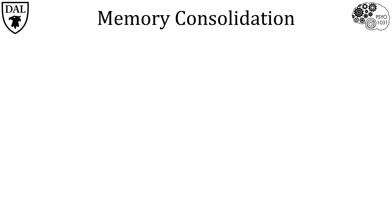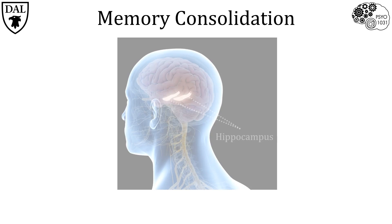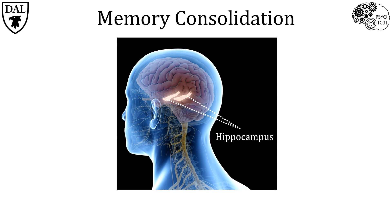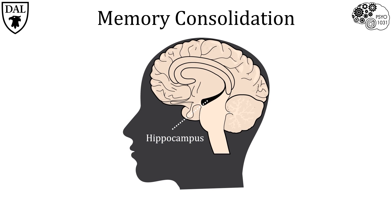If we move from sensory memory to working memory and then finally to long-term memory, we must acknowledge the role of the mighty hippocampus, which sits inside the cerebral cortices. The hippocampus can be visualized in this 3D representation or by taking a sagittal section down the midline of the brain and looking at it from a medial view. The act of consolidating memory — moving memories from temporary to long-term storage — is carried out by the hippocampus.